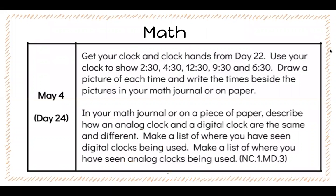For day 24 in math, you're going to get your clock and clock hands from day 22. Use your clock to show 2:30, 4:30, 12:30, 9:30, and 6:30. Draw a picture of each time and write the times beside the pictures in your math journal or on paper. In your math journal or on a piece of paper, describe how an analog clock and a digital clock are the same and different. Make a list of where you have seen digital clocks being used, and make a list of where you have seen analog clocks being used.